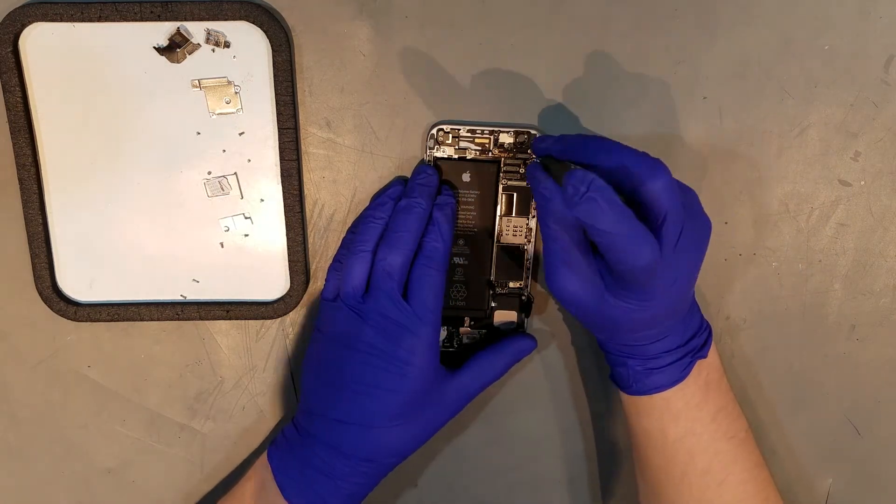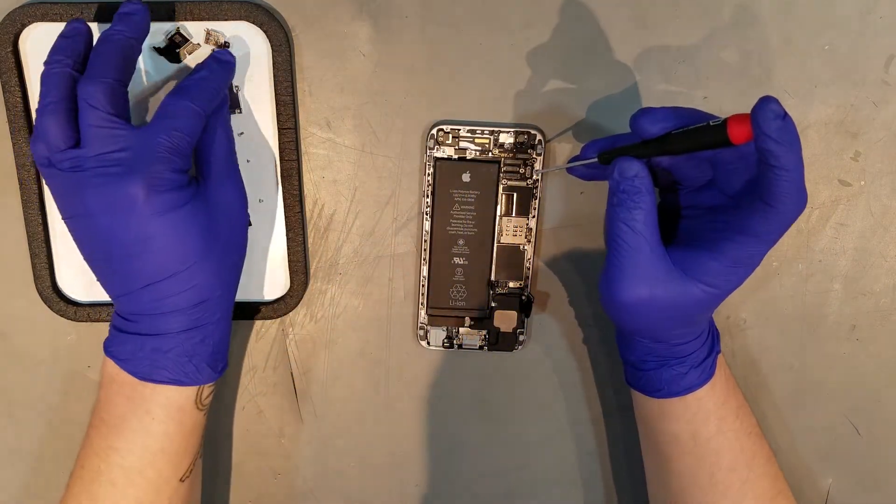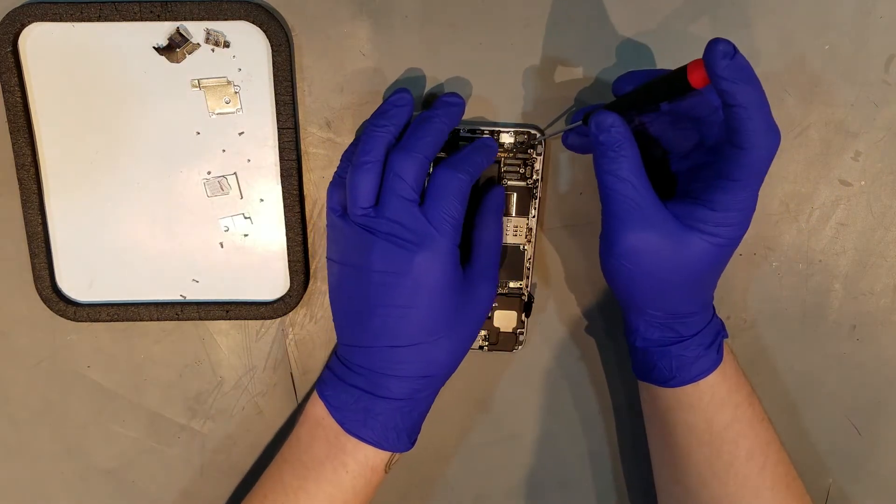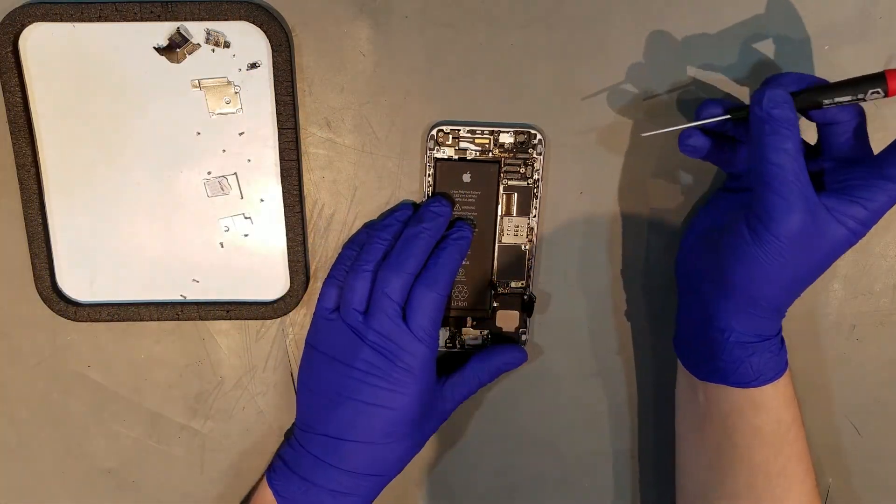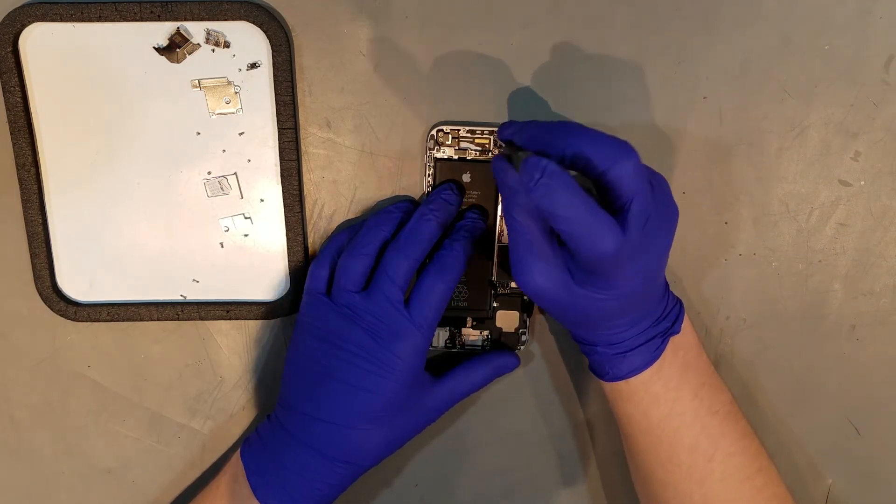There will be one more Phillips screw that secures a ground for the camera to the board that will need to be removed along with the ground itself. Next there's a Phillips screw that helps anchor the top of the board to the housing that will need to be removed.